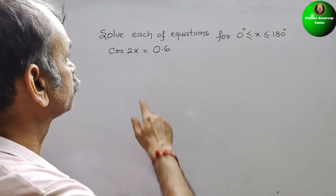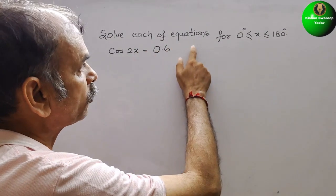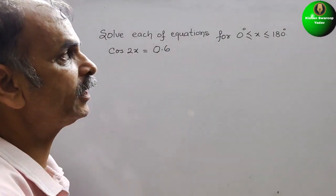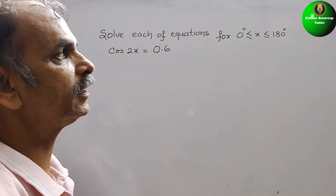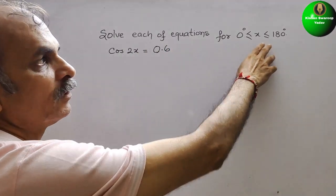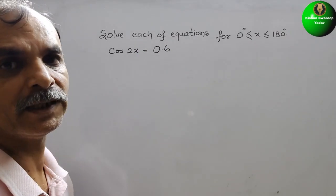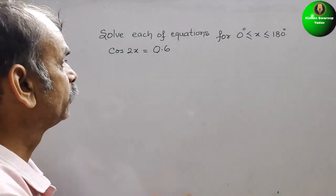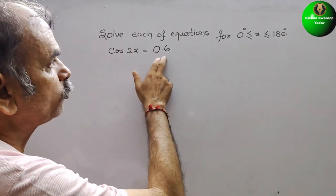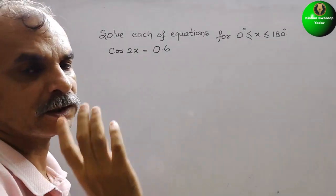Your question is: solve each of the equations for 0° ≤ x ≤ 180°. cos(2x) is equal to 0.6.